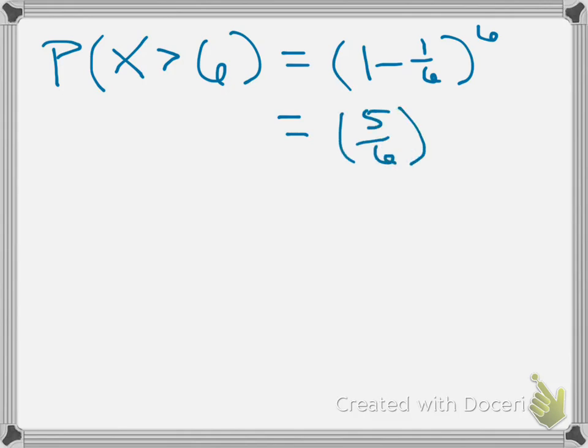And since 1 minus 1/6 is 5/6, what we're really doing here is raising 5/6 to the sixth power. And let me do that calculation. And it turns out that that is 0.3349, so there's about a 33.5% chance that it will take us more than 6 rolls to get our first 4.